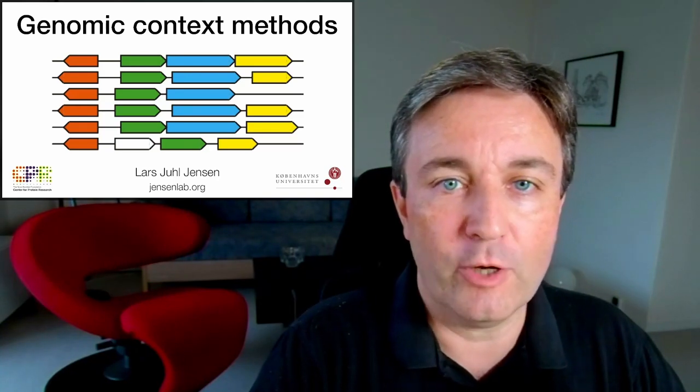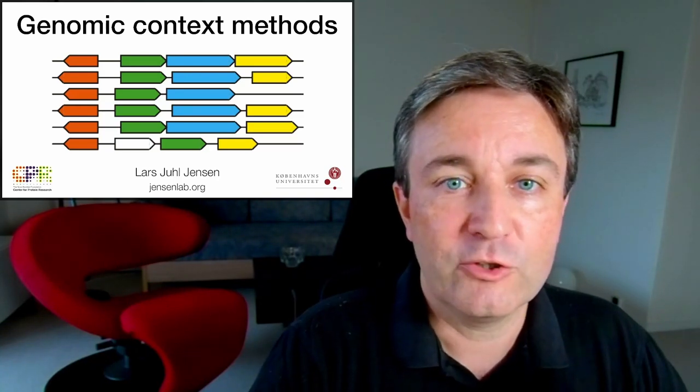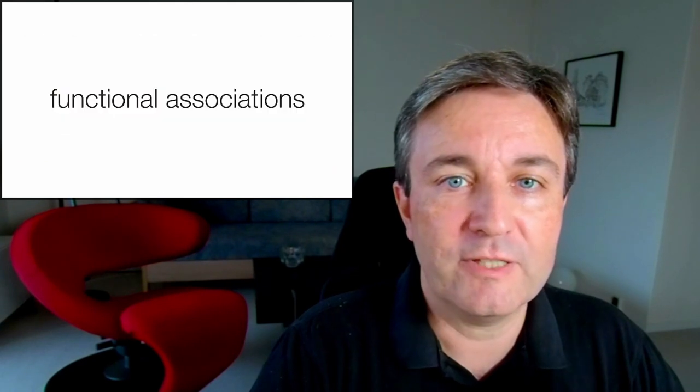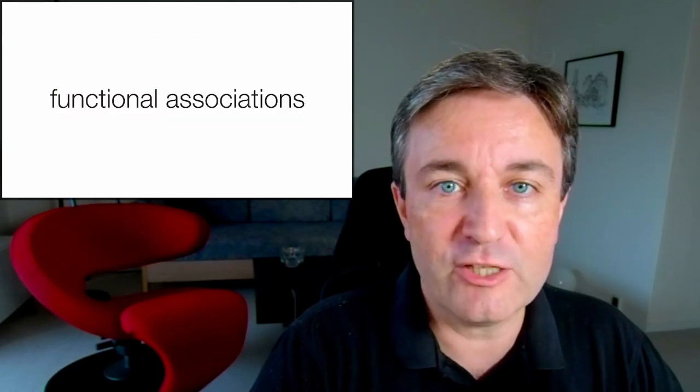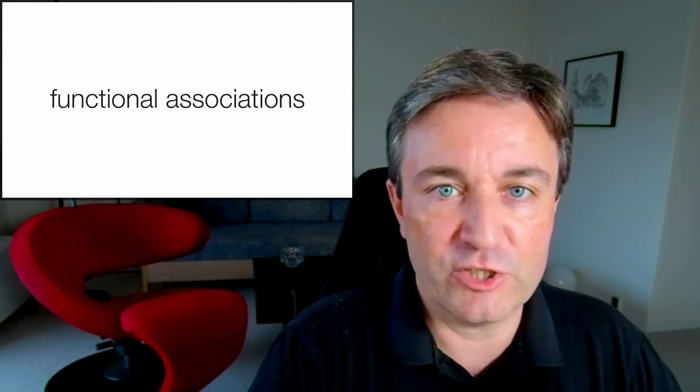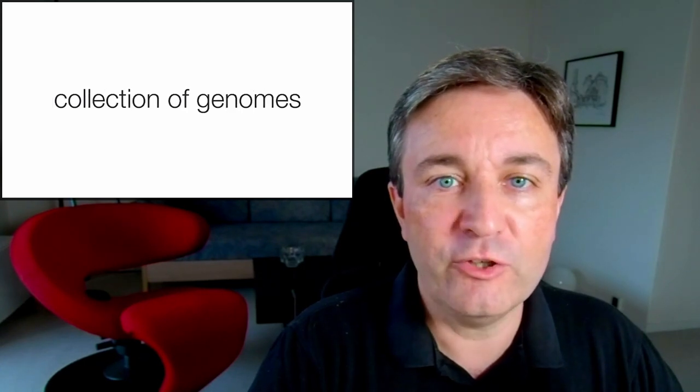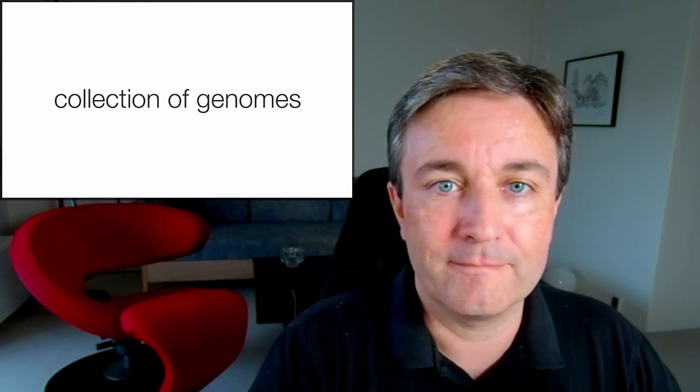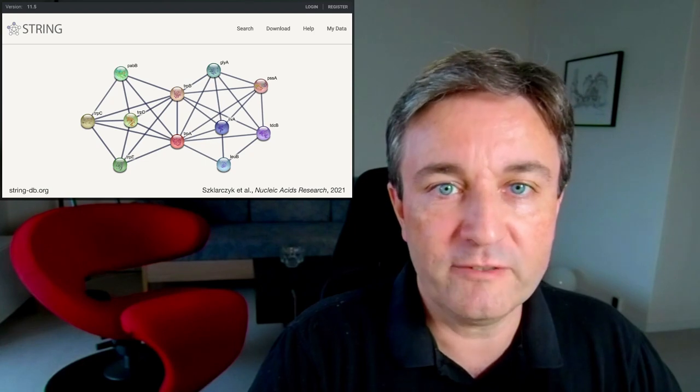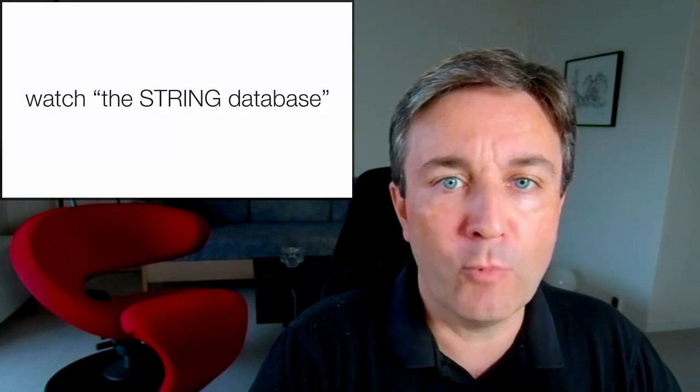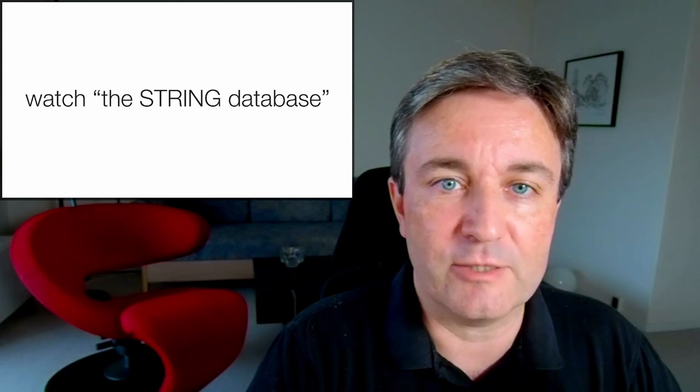Welcome to this deeper dive into genomic context methods. The goal of genomic context methods is to identify functional associations between genes, that is, which genes work together, based on nothing but a collection of genomes. These methods are included in the string database, which you can learn more about in this brief introduction to the string database.